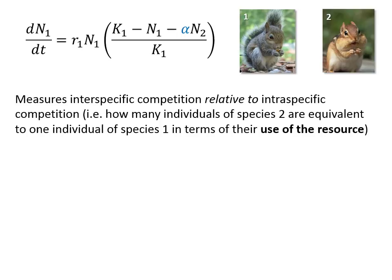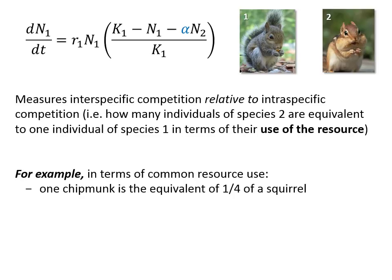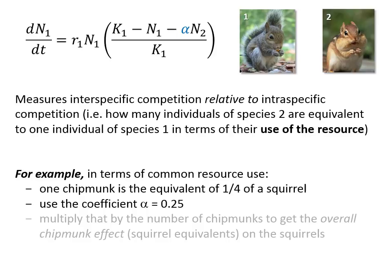So, in terms of this common resource use, one chipmunk might be hypothetically the equivalent of a quarter of a squirrel. So it would take 4 chipmunks competing with a squirrel to equal the competition from another squirrel. Thus, the coefficient would be 0.25. We can then take that alpha coefficient and multiply it by the number of chipmunks to get the overall effect in squirrel equivalents that the chipmunks have on the squirrels.